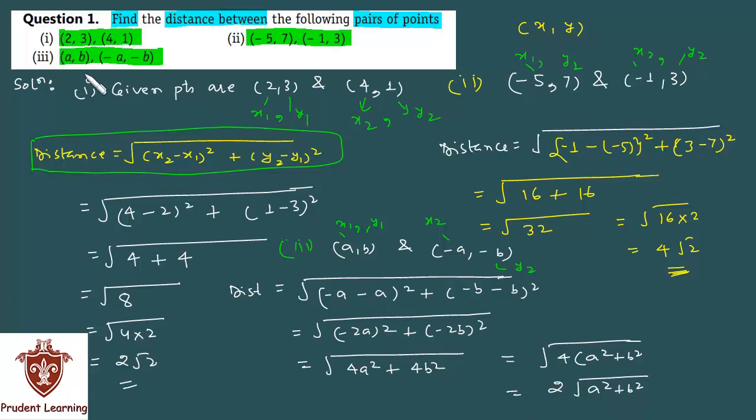So finally, for the third section where you were given the points, the distance between them is 2 under root of a square plus b square, or 2 times under root of a square plus b square. So this completes our solution.